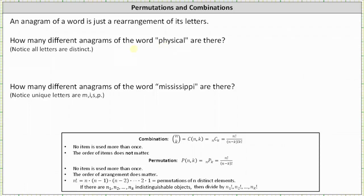If we take a look at our notes, n factorial is equal to the permutations of n distinct elements, which in this case, because we have eight distinct letters in the word physical, the number of anagrams is equal to eight factorial.